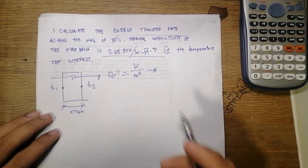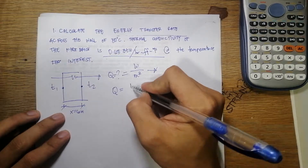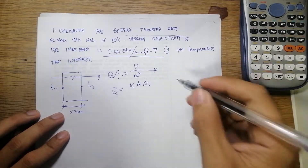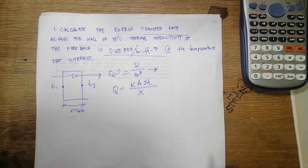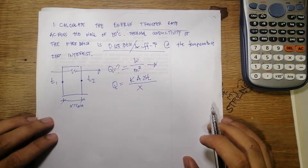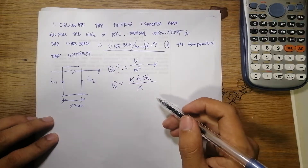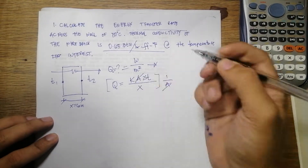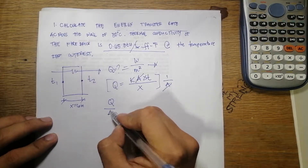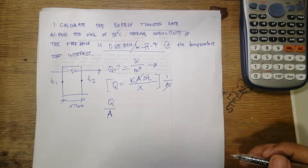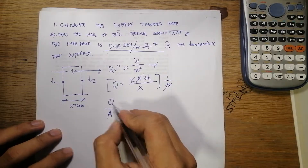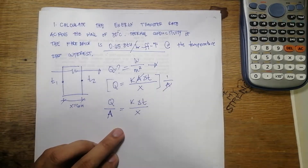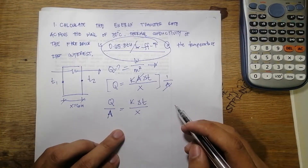First, we write the formula for heat transfer: Q is equal to k, the thermal conductivity, times A, the cross-sectional area, times the change in temperature, all divided by the thickness x. We can multiply both sides by 1 over A to cancel the area, giving us Q over A, the rate of heat per square meter.